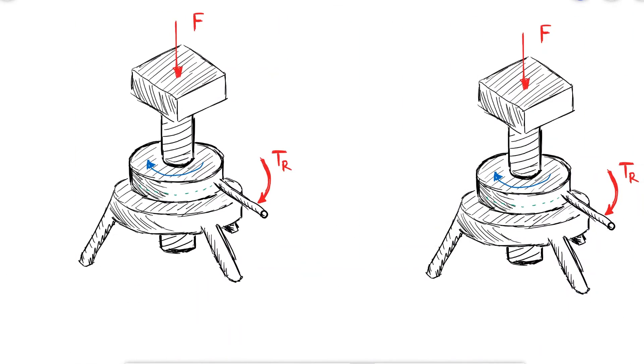In other words, part of the torque will go towards the interaction between the nut and the threads and the rest will go to overcome the friction between the nut and the collar.